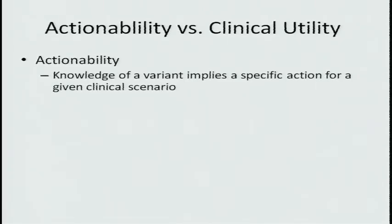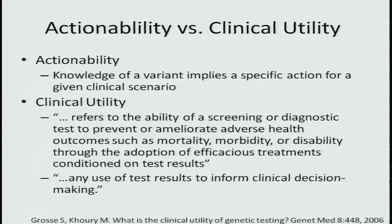I might disagree with Bob Nussbaum on one point, which is the idea that we actually understand what we're talking about with clinical utility. I agree that we don't understand what we're talking about with actionability, and so this is my attempt to define it: that knowledge of a variant implies a specific action for a given clinical scenario. In this paper on the clinical utility of genetic testing, they refer to that as the ability of a screening or diagnostic test to prevent or ameliorate adverse health outcomes such as mortality, morbidity, or disability, through the adoption of efficacious treatments conditioned on test results.